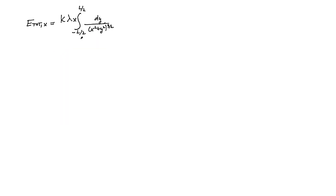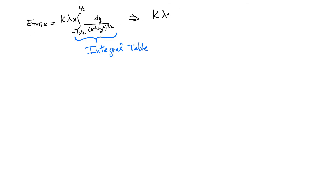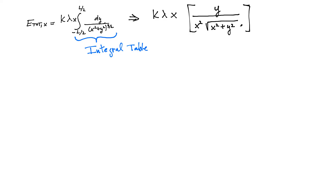The next step is we have to evaluate this integral, and in its current form this is actually not that easy. So I simply looked it up in an integral table. After doing that, I can write that the total electric field magnitude — the x-component of the field — is found by evaluating the result from the integral table. Integrating over y, I'm going to get y up here, x squared here, and square root of x squared plus y squared, evaluated between L/2 and minus L/2.